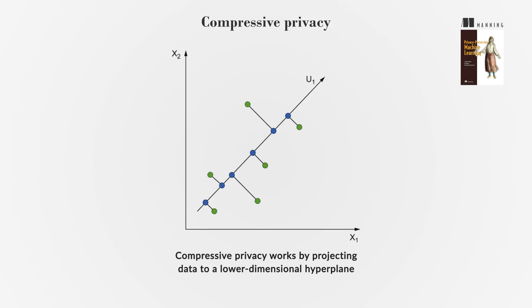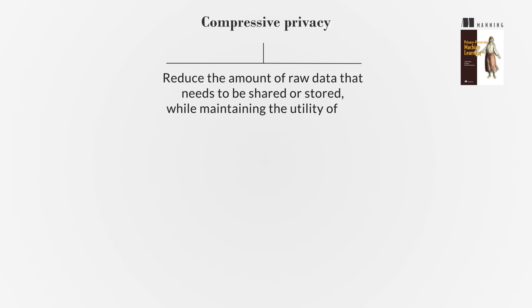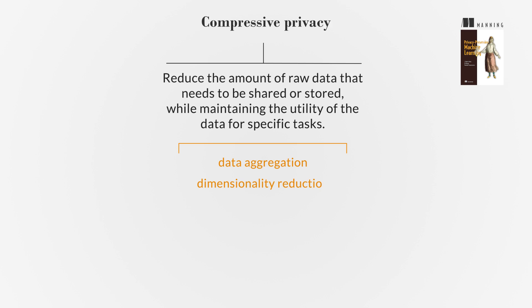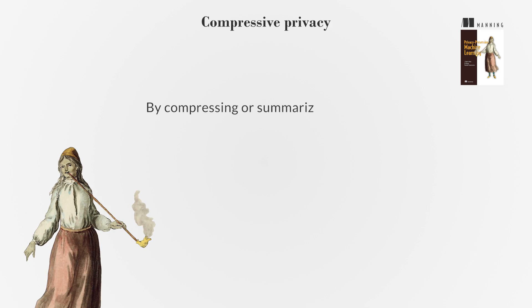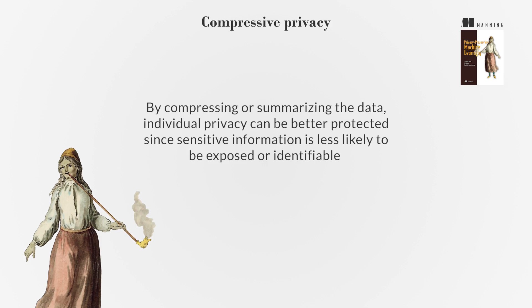Achieving the right balance between data privacy and utility requires careful consideration of the specific use case and privacy requirements. Compressive privacy seeks to address privacy issues by compressing or summarizing data while still preserving its useful properties for analysis. The idea is to reduce the amount of raw data that needs to be shared or stored, while maintaining utility for specific tasks — achieved through techniques such as data aggregation, dimensionality reduction, or the use of privacy-preserving algorithms. By compressing or summarizing the data, individual privacy can be better protected since sensitive information is less likely to be exposed or identifiable.